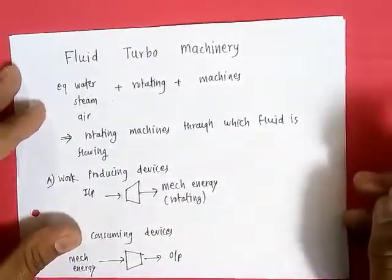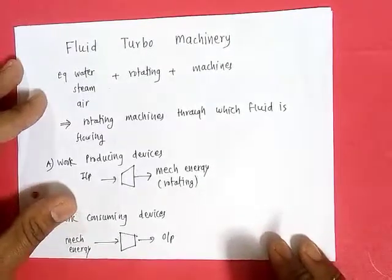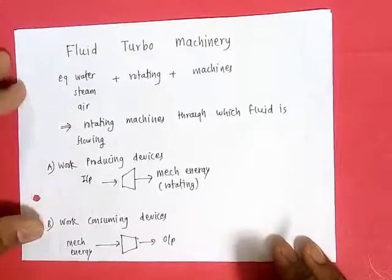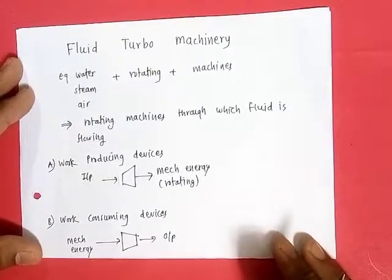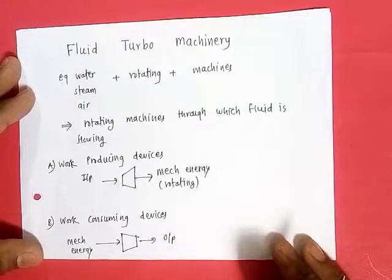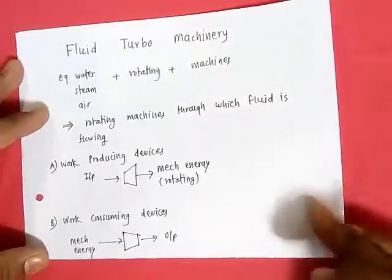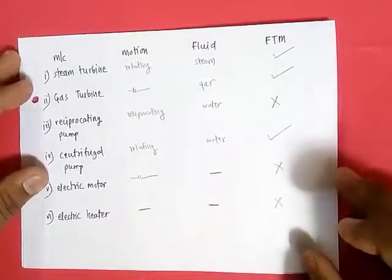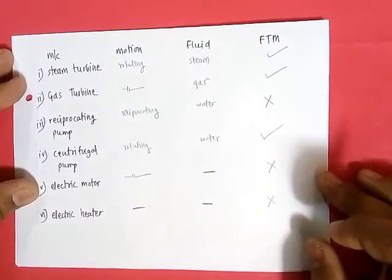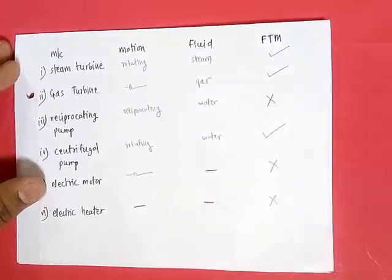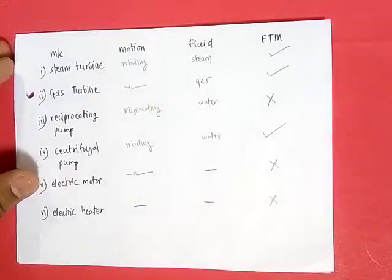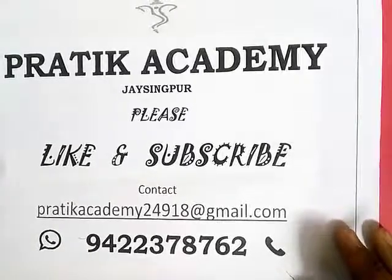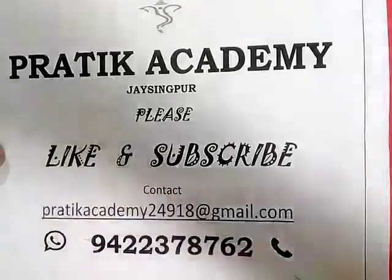So in this video we have seen what is meant by fluid turbo machines. Fluid turbo machines means rotating machines through which fluid is flowing. The major two classifications are work producing devices and work consuming devices. Work producing means gives mechanical energy as output; work consuming means consumes mechanical energy. We have also seen how to check whether a machine is a fluid turbo machine or not. Thank you for watching — please share and subscribe to our channel. If you still have doubts or need improvement, please contact us.